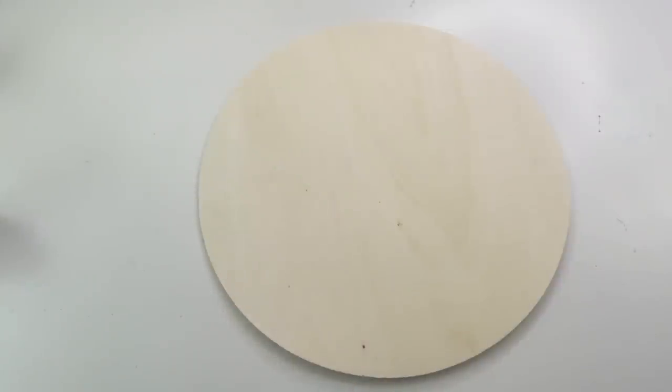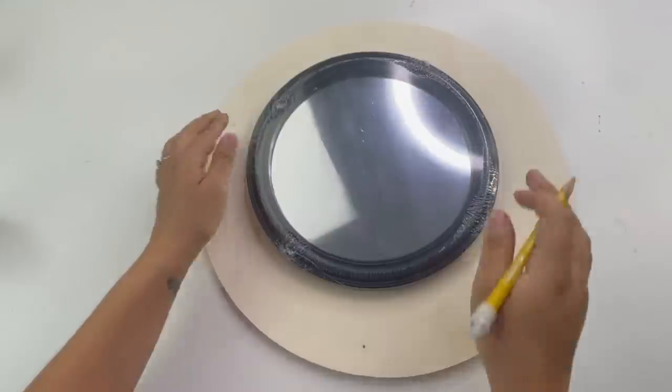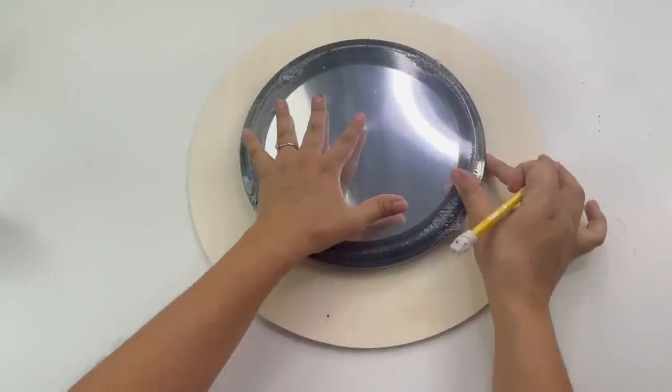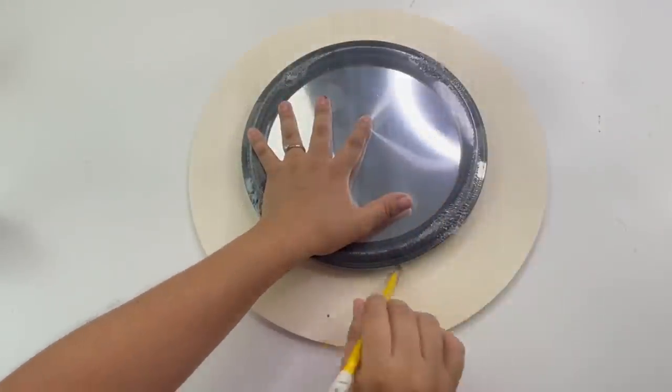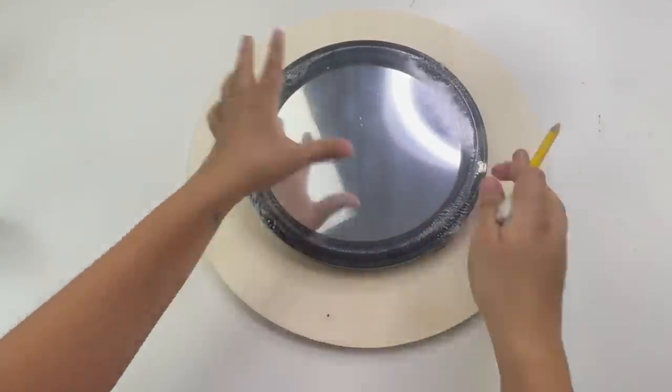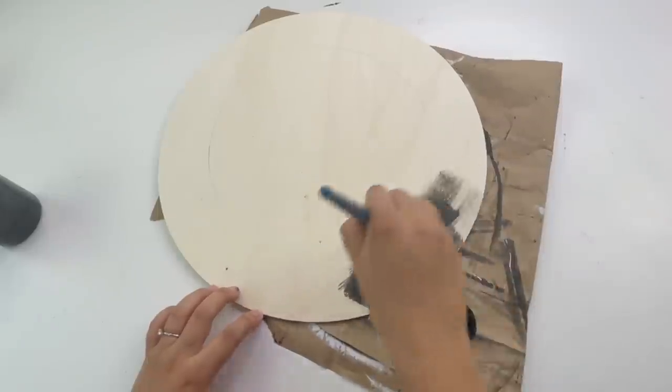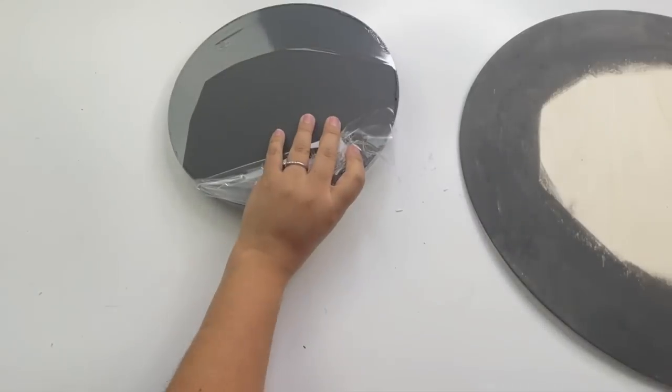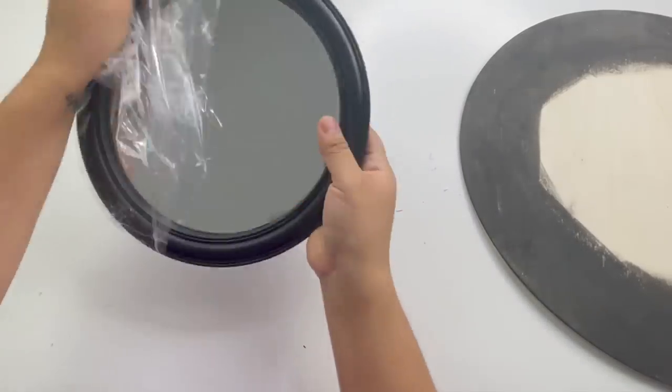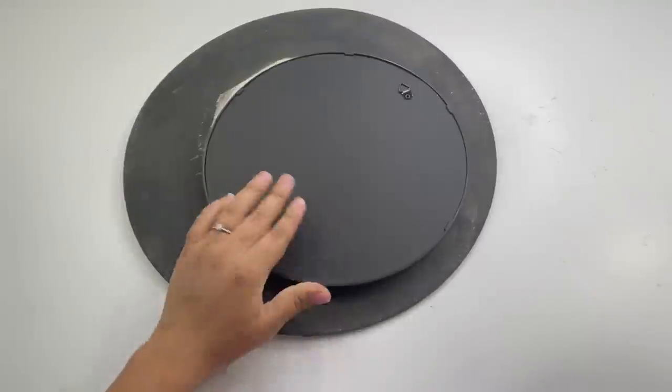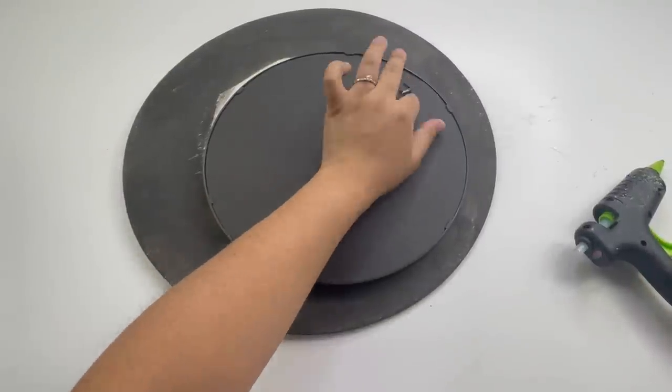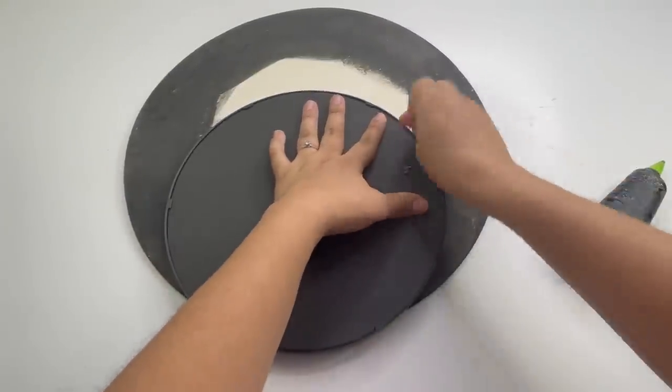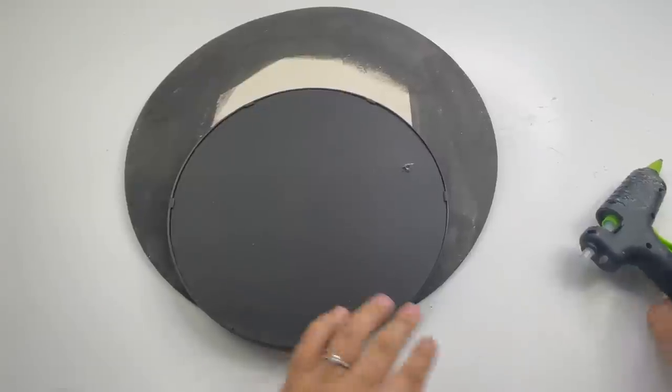For this wood circle, instead of painting that entire thing, I'm going to use this mirror and trace it and then just paint the outside part. I will be using this Dollar Tree mirror and I'm going to glue it in the center. Now I only use hot glue since this is not heavy.